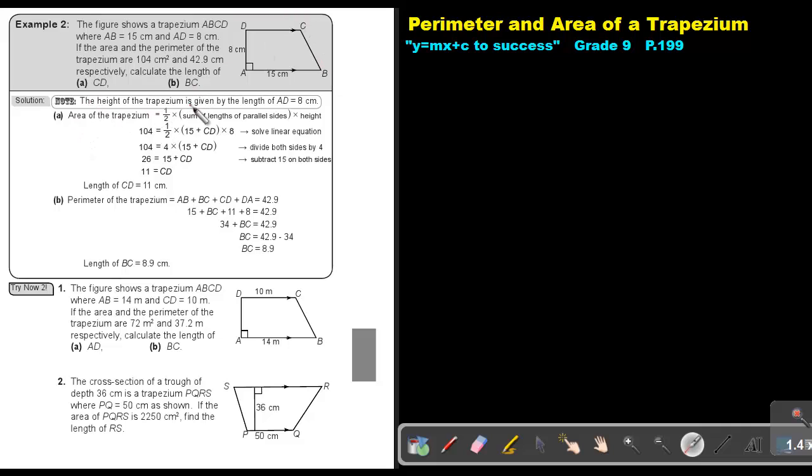Now, if we start, the height of a trapezium is given by the length of AD. Remember, that side makes a 90 degree angle, and that's why it's also the height. So, the area of a trapezium, first write down your formula. Then just do substitution.